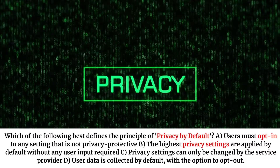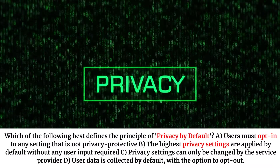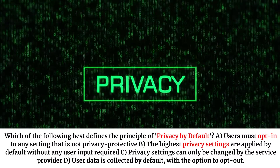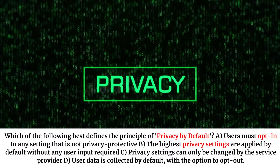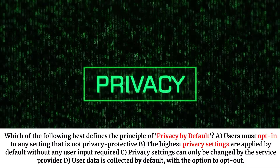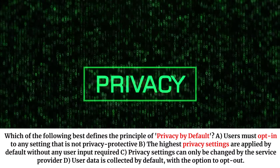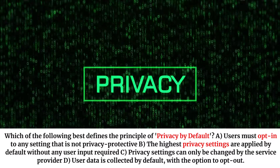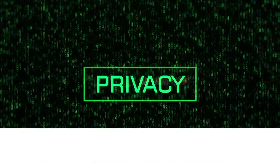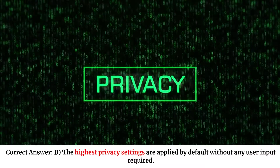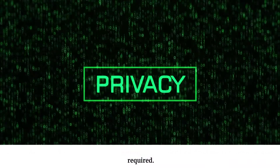Which of the following best defines the principle of privacy by default? A. Users must opt into any setting that is not privacy protected. B. The highest privacy settings are applied by default without any user input required. C. Privacy settings can only be changed by the service provider. D. User data is collected by default, with the option to opt out. Correct answer: B. The highest privacy settings are applied by default without any user input required.